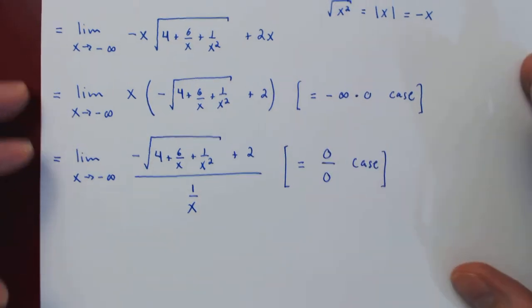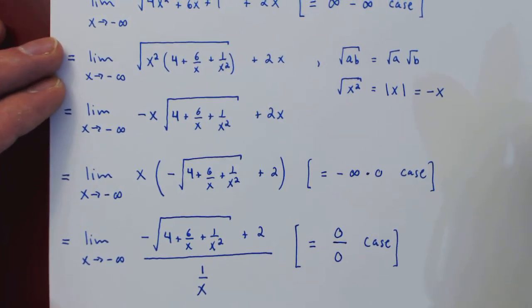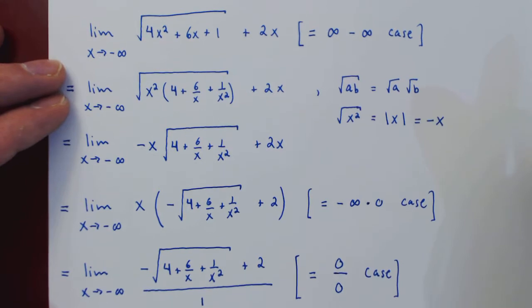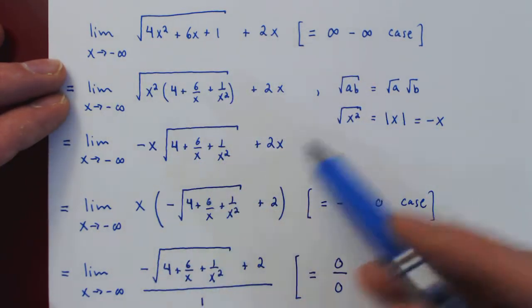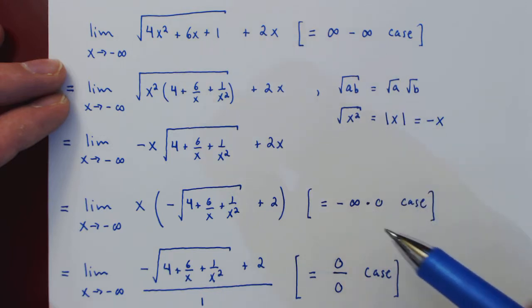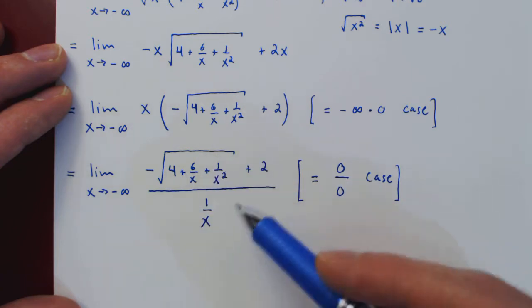And at that point we've hit a real problem. We tried to find this limit directly by factoring out the largest term. That changed the case but was still indeterminate. We tried to create a different case by creating a fraction.